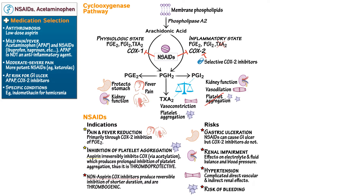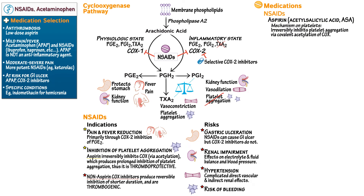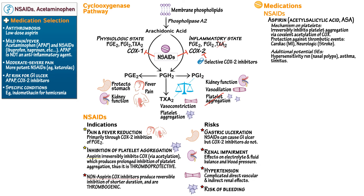Now let's run through some specific aspects of NSAIDs and acetaminophen. Aspirin irreversibly inhibits platelet aggregation via covalent acetylation of cyclooxygenase, and therefore provides protection against thrombotic events such as cardiac or cerebrovascular events. It has some key additional potential side effects: a hypersensitivity reaction — note that patients who have nasal polyps are more likely to suffer from this — and it can produce asthma or tinnitus.